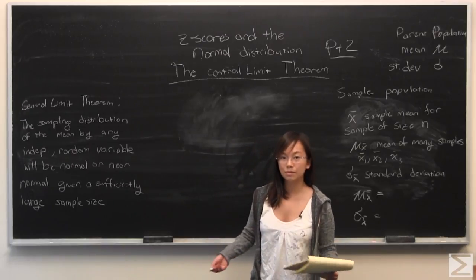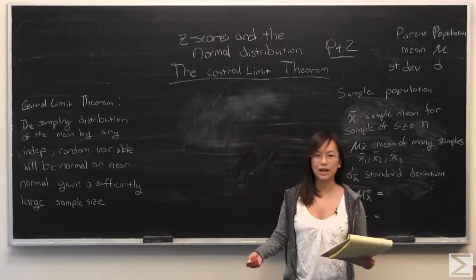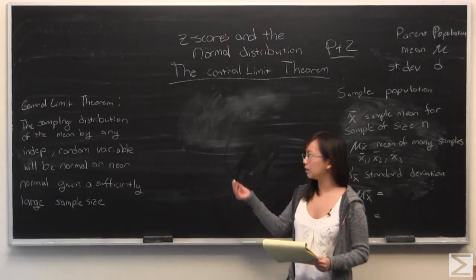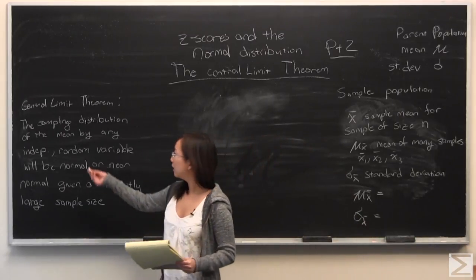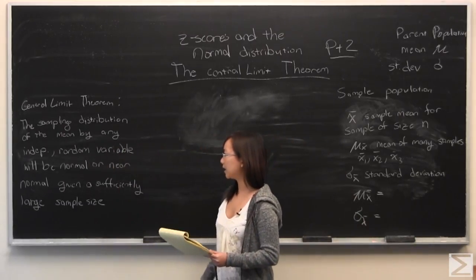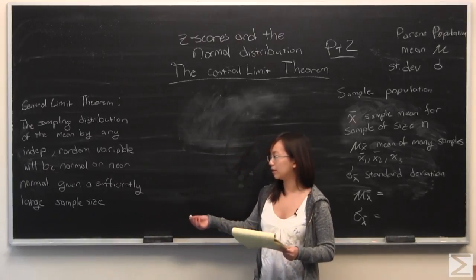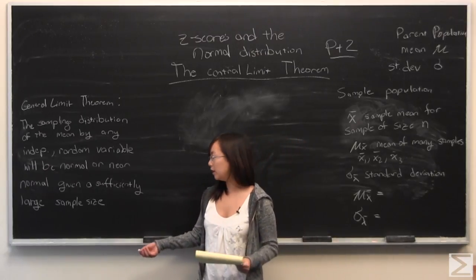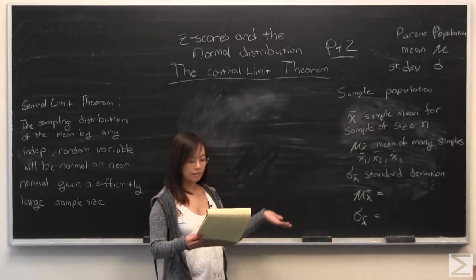So the central limit theorem is pretty cool. And it's the reason why we can apply statistics the way we do to the real world. And I've written down what it means right there. It says the sampling distribution of the mean by any independent random variable will be normal or very near normal, given a sufficiently large sample size. And so what does that mean?